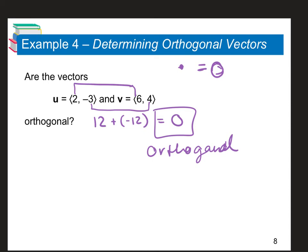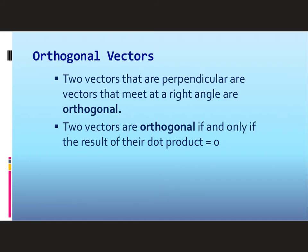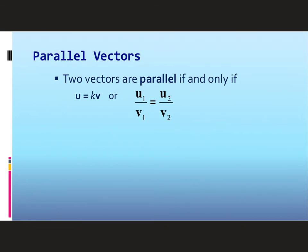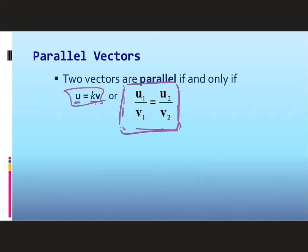Make sure you show your work for these problems. Two vectors are orthogonal if and only if their dot product equals 0. The opposite of orthogonal is parallel: two vectors are parallel if and only if they are proportional to each other — meaning u equals some constant times v, or equivalently, u1 over v1 equals u2 over v2.